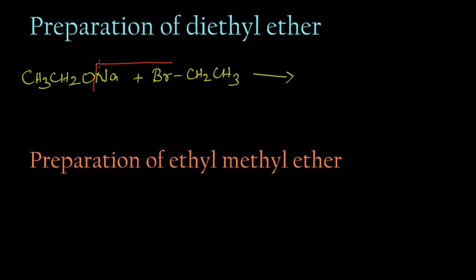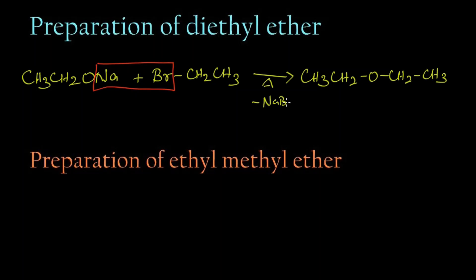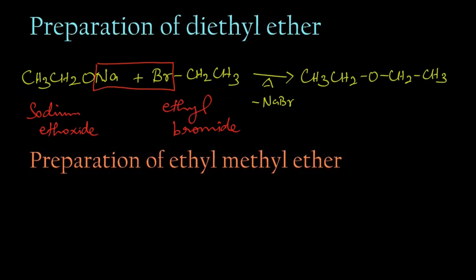What happens is the sodium and bromine leave as sodium bromide (NaBr), and the remaining parts get attached, giving CH3CH2OCH2CH3. So when sodium ethoxide reacts with ethyl bromide on heating, sodium bromide is released and we get diethyl ether, also called ethoxyethane.